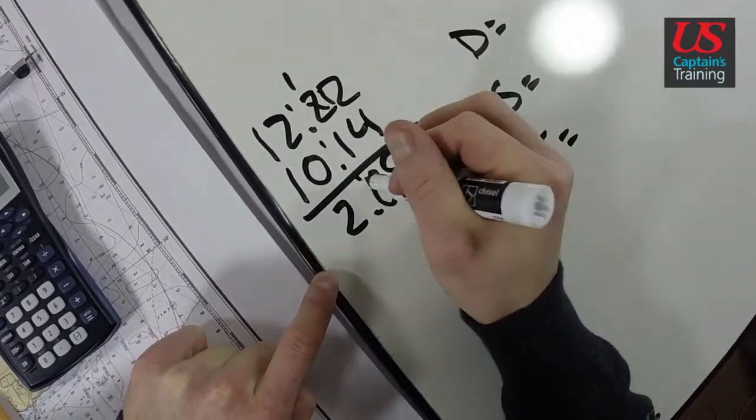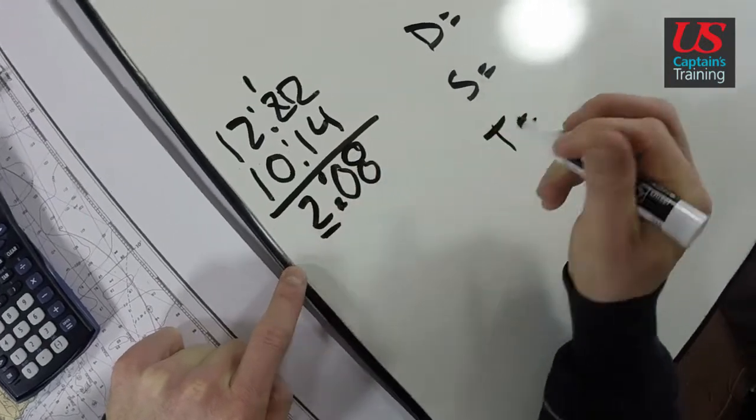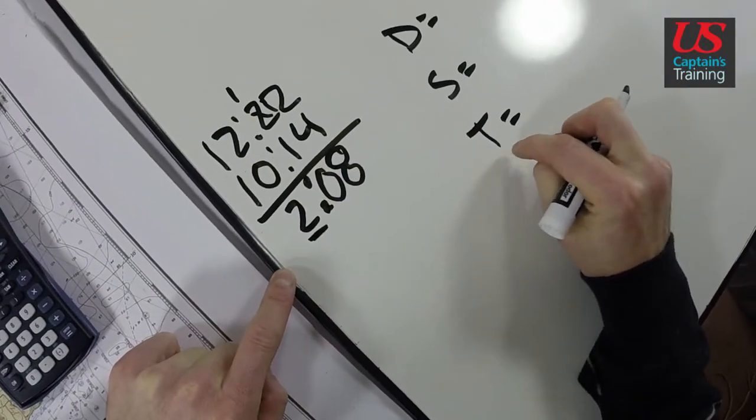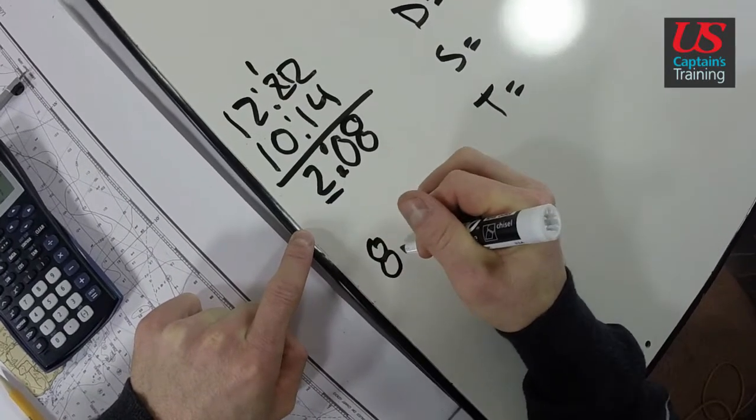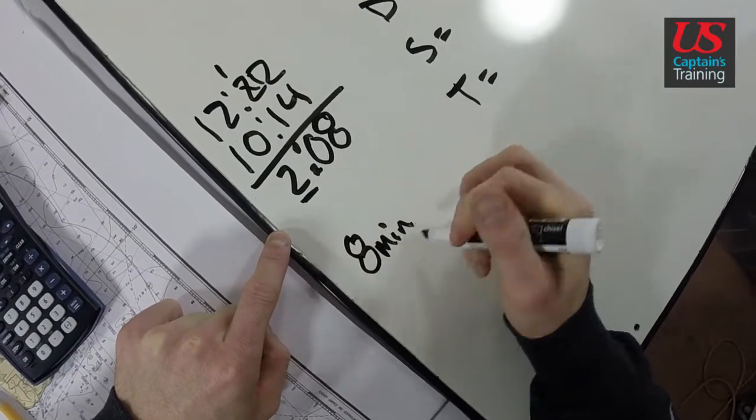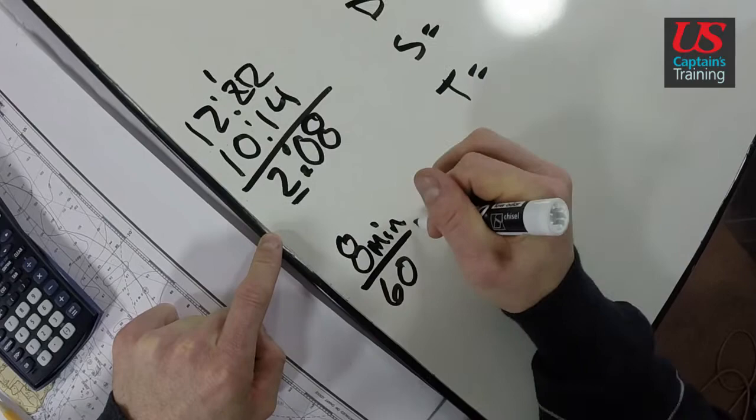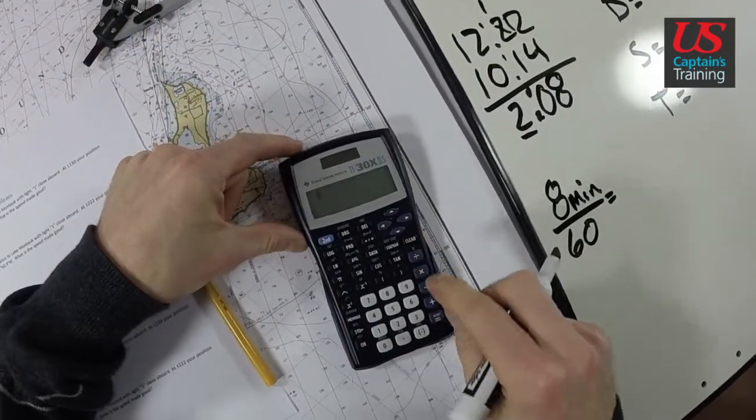This 2 hours is good. This time must be in hours only. So we need to take these 8 minutes, 8 minutes and divide it by 60. 8 divided by 60 equals 0.13 hours.